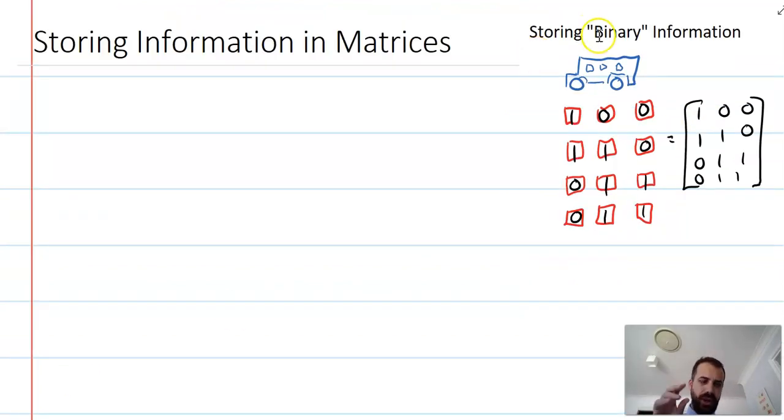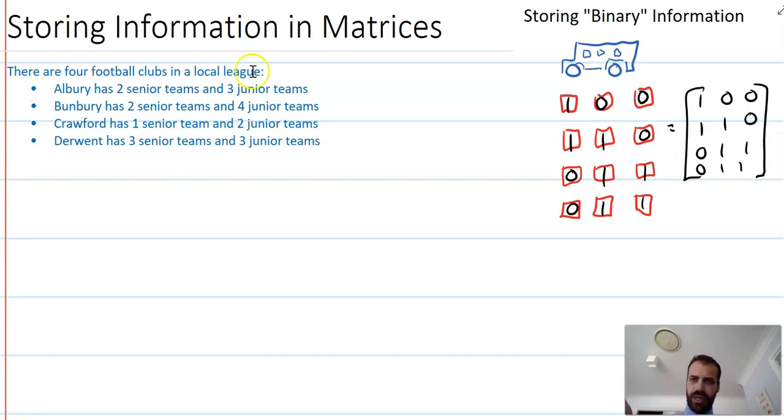But we can also store information that isn't binary in a matrix, because obviously we're not confined to just using ones and zeros. All right, so you can read that question there, and you can even pause the video now and try to summarize that information in a matrix. Pause, summarize it, go.